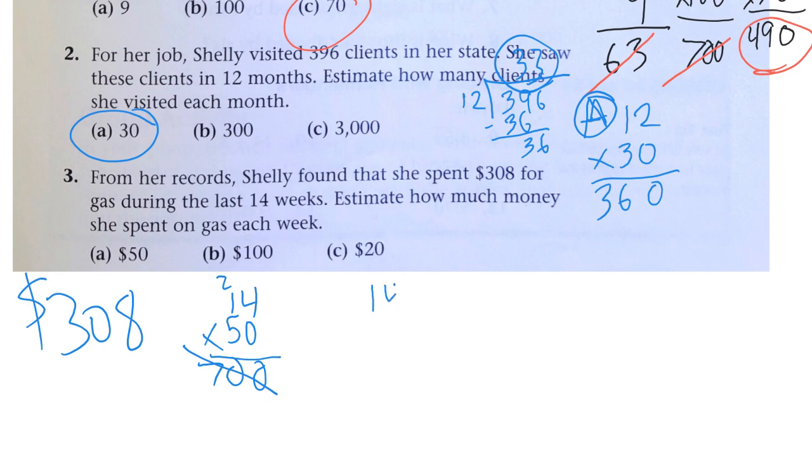What about 14 weeks at $100 per week? Well, that would be 14 with two more zeros. That's even more.